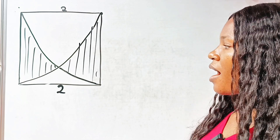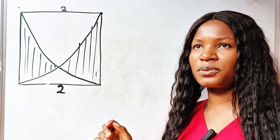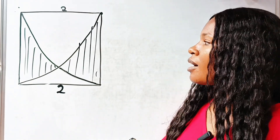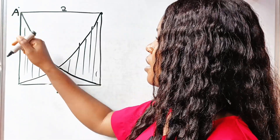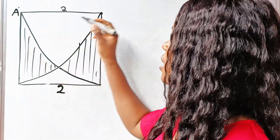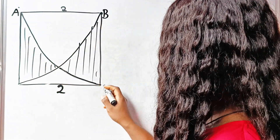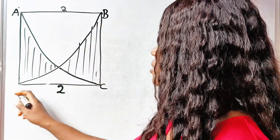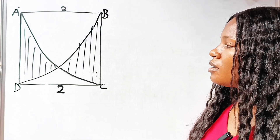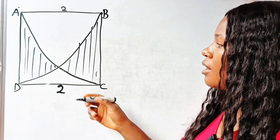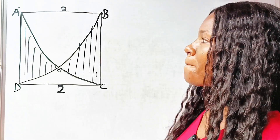Permit me to add more information to this diagram. This is A, this is B, this is C, and this is D. Now let's call the meeting point O.